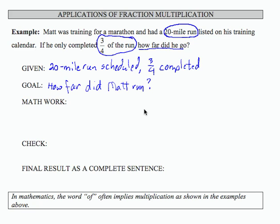Now, our math work on this, in mathematics, when we see an expression such as 3 fourths of the run, the of for us usually means multiplication. So let's try multiplying 3 fourths times 20 and see if that gives us a result that makes sense.